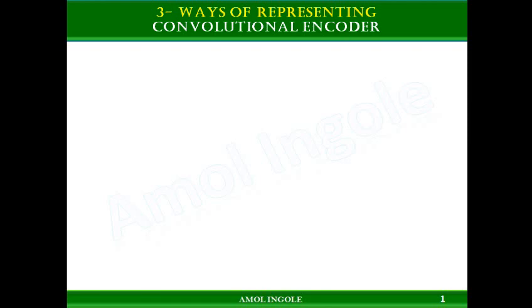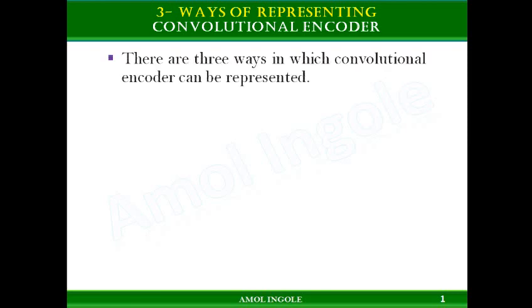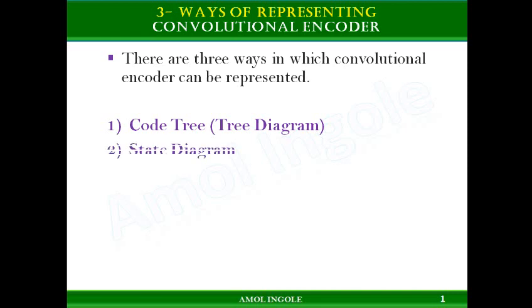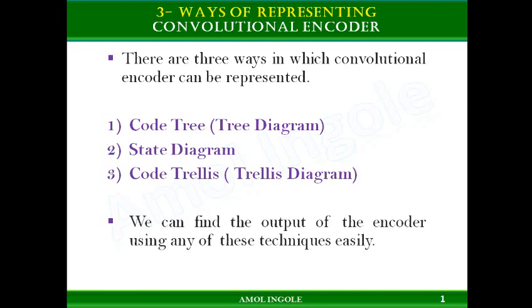Hello students, this is Amur Ingole and in this video I am going to explain tree diagram, also called as code tree. There are three ways in which a convolutional encoder can be represented: code tree (tree diagram), state diagram, and code trellis (trellis diagram). We can find the output of the encoder by using any of these techniques easily.